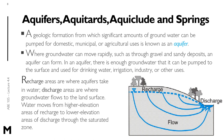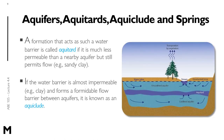When an aquifer is full, the water table meets the ground surface, and water stored in the aquifer can appear at the land surface as springs or seeps. Recharge areas are where aquifers take in water, and discharge areas are where groundwater flows to the land surface. Water moves from higher elevation recharge areas to lower elevation discharge areas through the saturated zone.